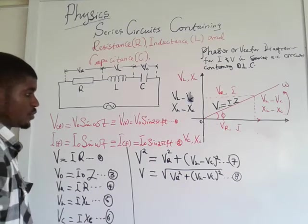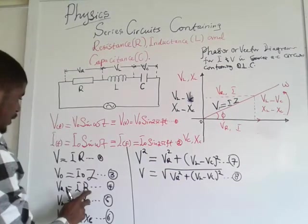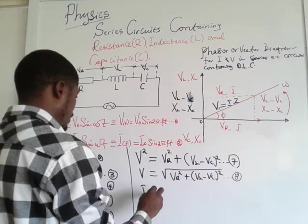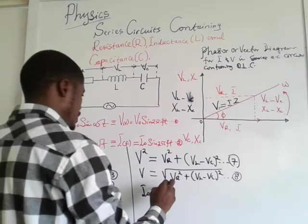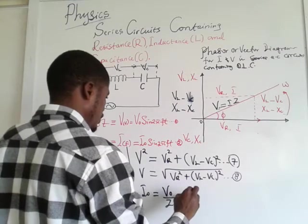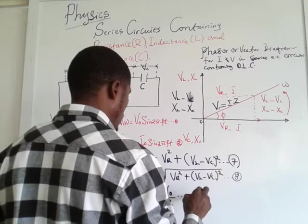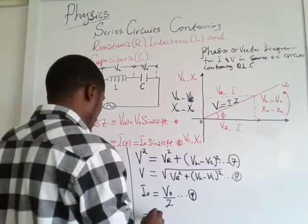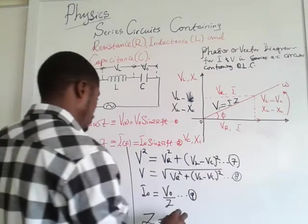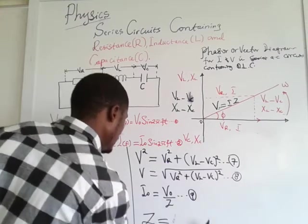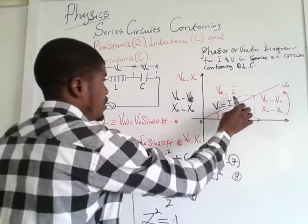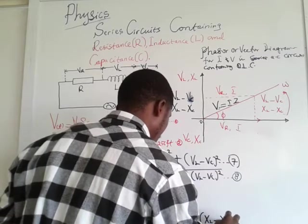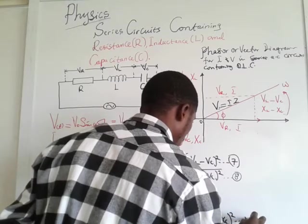From equation eight, we can make I₀ the subject: I₀ = V₀ / Z — equation nine. Now, Z is the impedance and is given by equation ten as: Z = √(R² + (XL − XC)²).